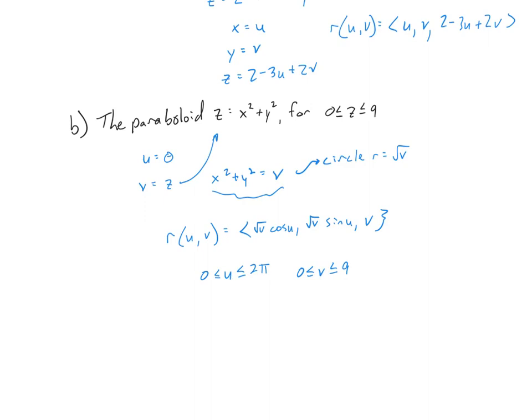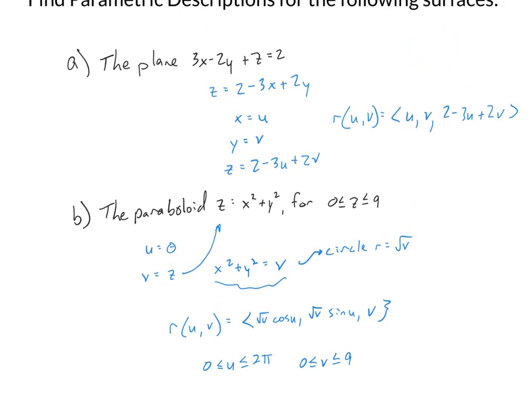For the plane from the first example, we didn't specify the interval. Since we were given no limitations on the plane, u would be from negative infinity to positive infinity, and v similarly from negative infinity to positive infinity.